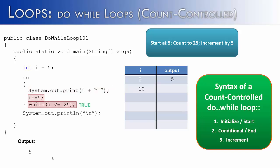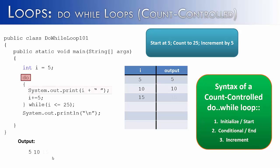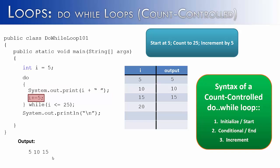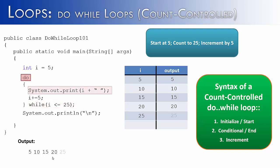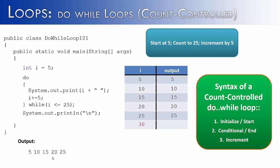i plus equals 5 makes i 10. The while statement is true — 10 is less than 25 — go to the do, print out 10. i plus 5 is 15, the while statement is true, go to the do, print out 15. i plus equals 5, so now i is 20. Checks the condition — still true — go to the do, print out 20. i plus equals 5, so now i is 25. 25 is less than or equal to 25, so we continue — 25 prints out. i plus equals 5, so now i is 30. That's the exit condition, so the loop ends. Our output is 5, 10, 15, 20, 25.